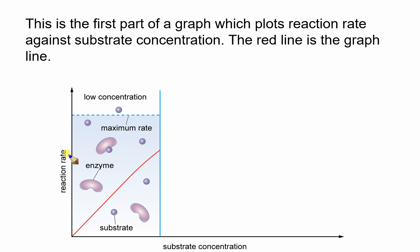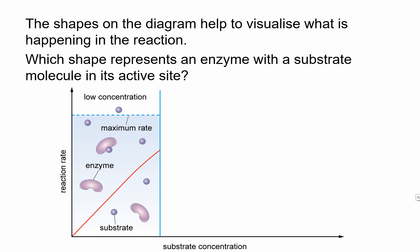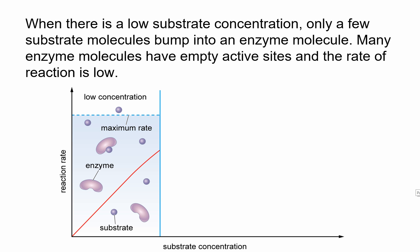Remember, substrate could either be broken down or built up. We've got some shapes in this diagram: a kidney shape for the enzyme and a round substrate shape — these are commonly used by the exam board. Which shape represents an enzyme with a substrate molecule in its active site? That's been circled — that's the substrate fitting in the active site, the lock and key mechanism.